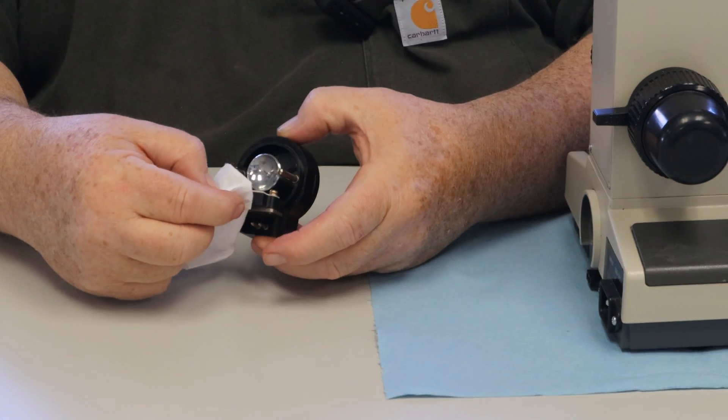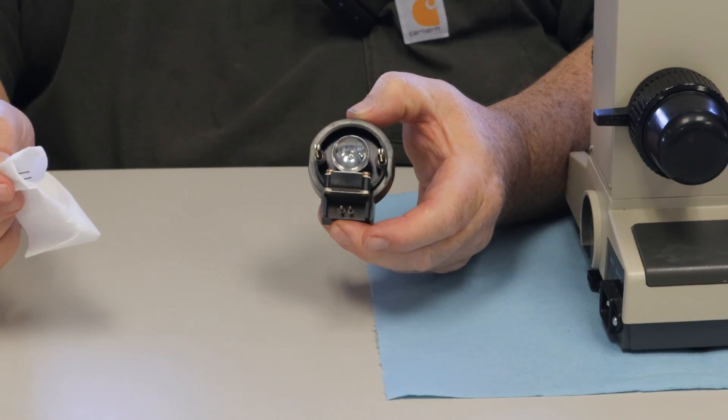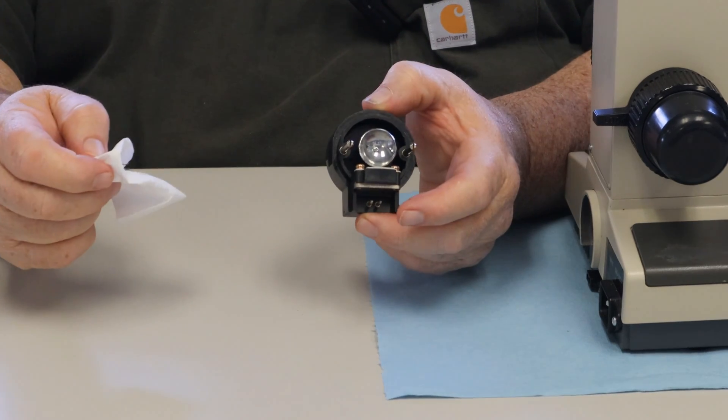If your lamp socket is discolored around here, that means your bulb has been arcing and you need to get the lamp socket replaced as well.